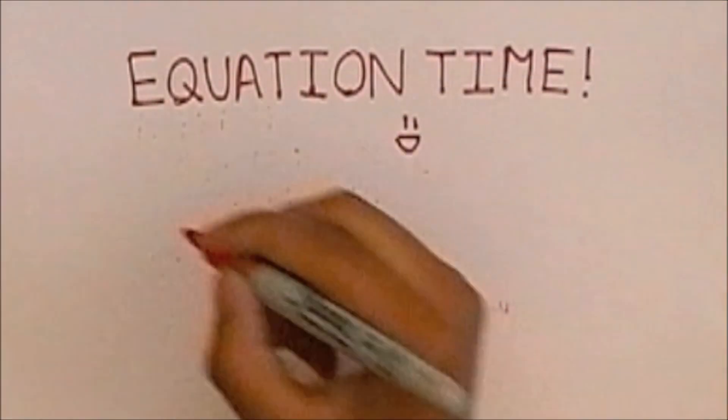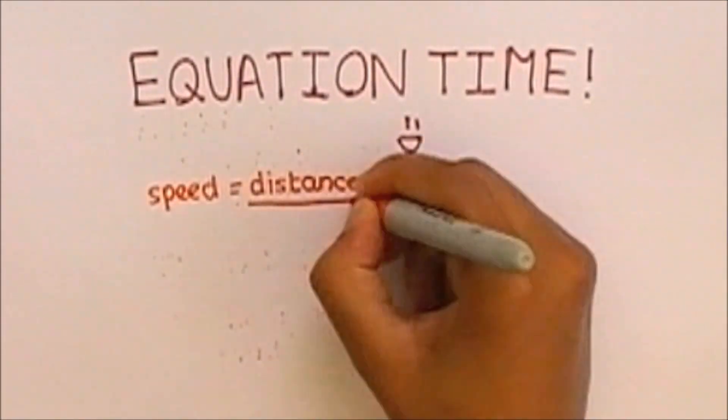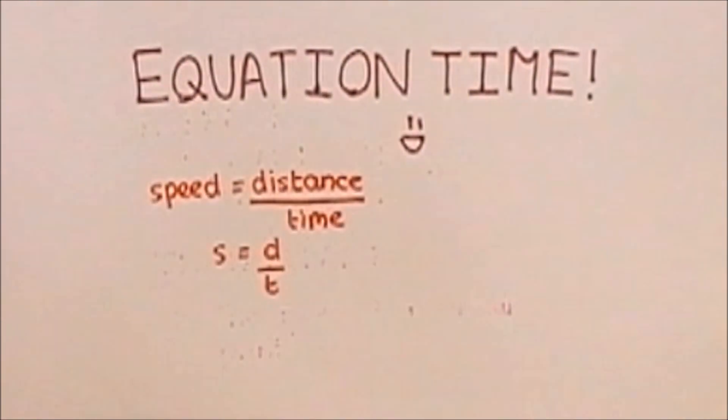Equation time. Speed equals distance divided by time, also written as s equals d over t.